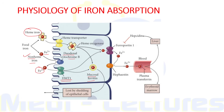Whenever our body requires iron, this ferritin — which has iron in Fe²⁺ form — can be transported to the blood through the basolateral membrane of the duodenal mucosal cell via a transport protein known as ferroportin 1, which transfers iron from the mucosal cell to the blood.